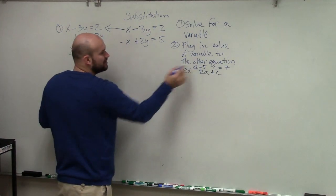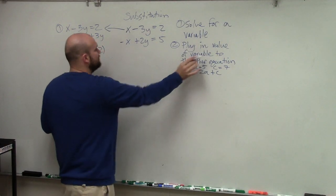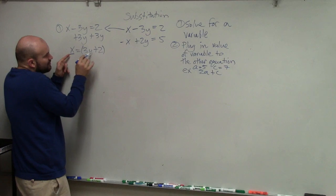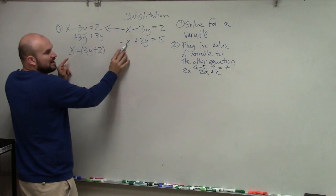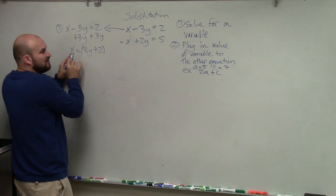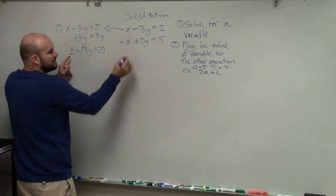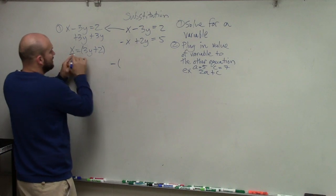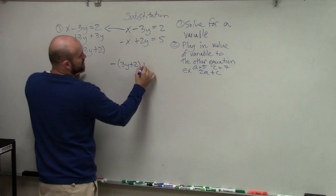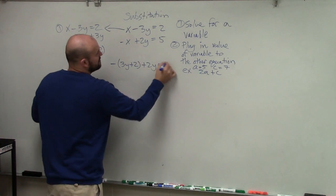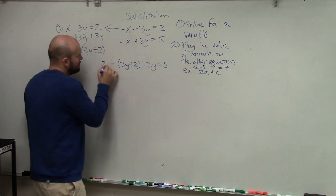So just like how you guys did here, what I said is plug in the value of the variable. Well, the value of my variable is 3y plus 2, and you plug it into the other equation. So I'm going to plug in the value of x into this equation. So therefore, I write negative - instead of x, I write the value of x, which is an expression, 3y plus 2, plus 2y equals 5. That is step number two.